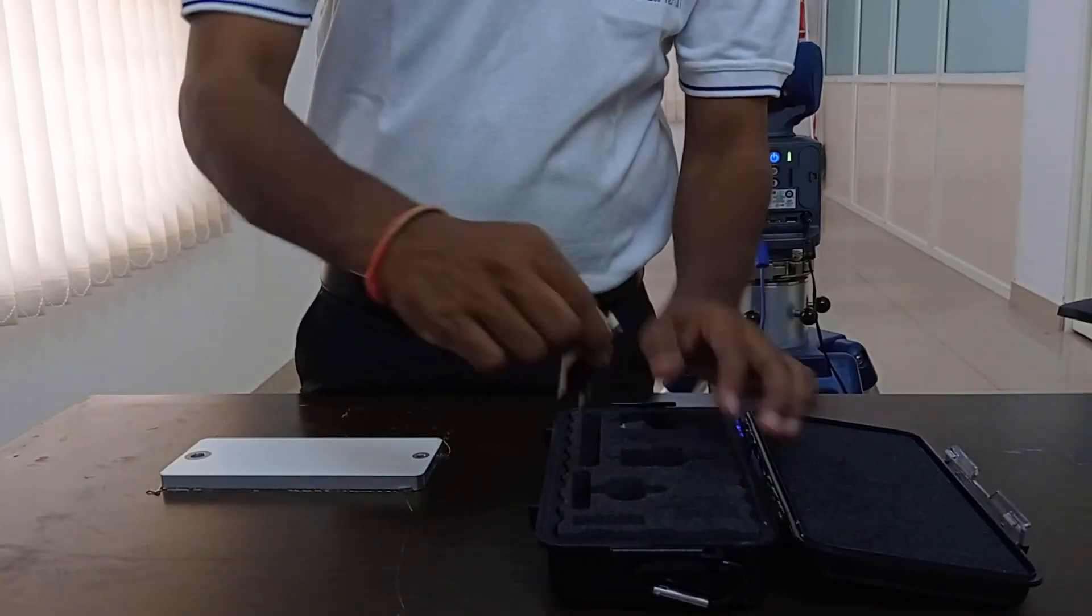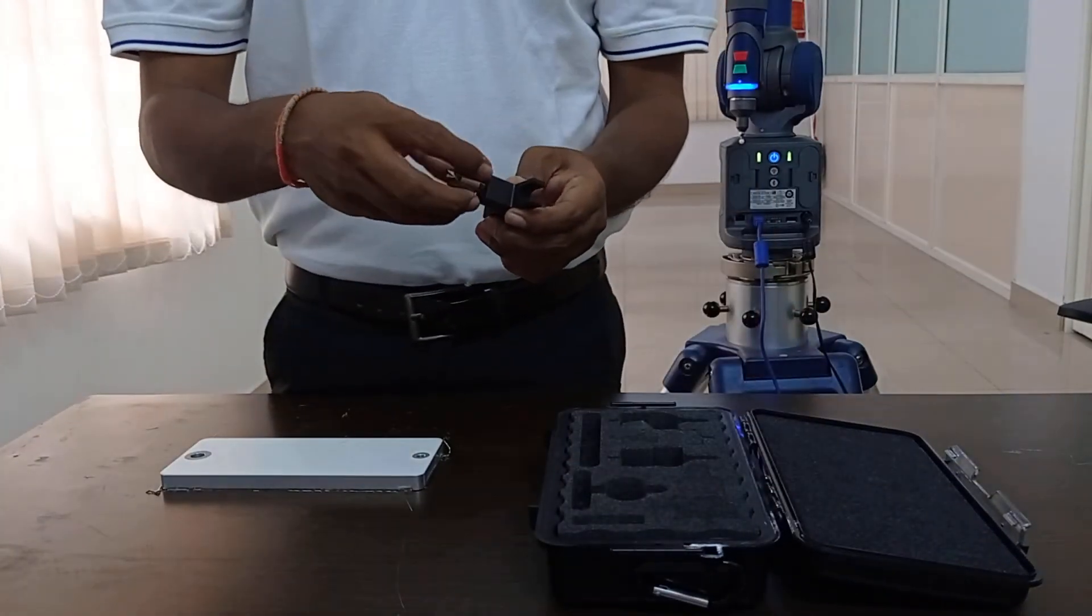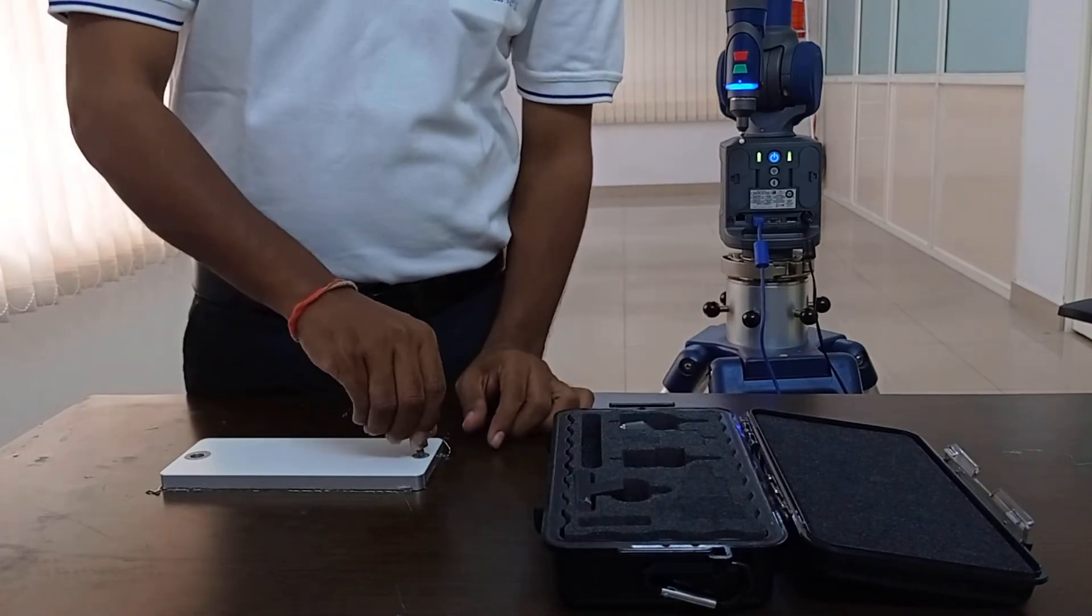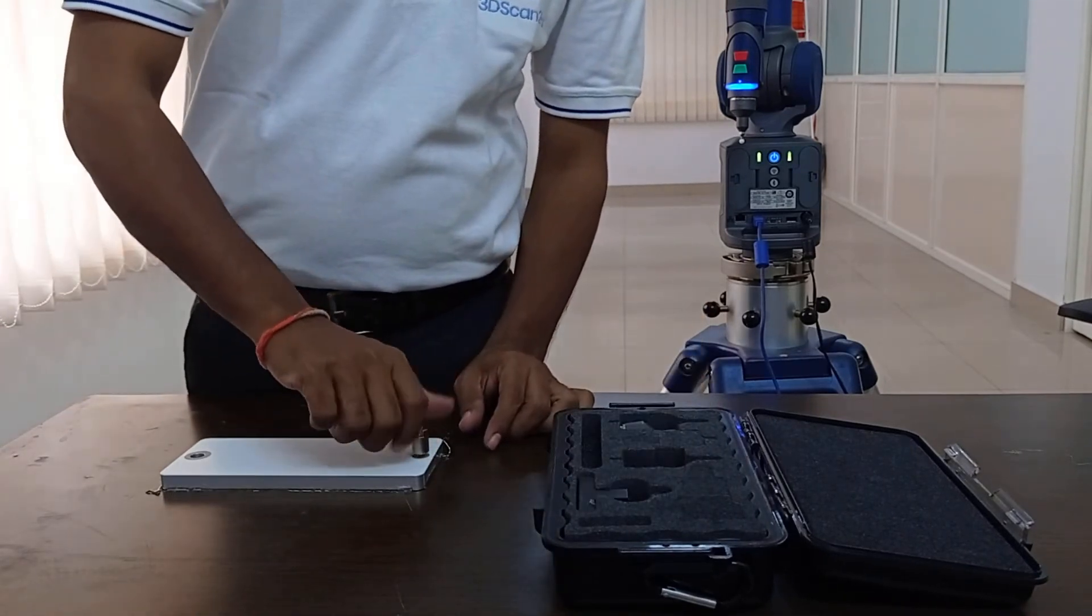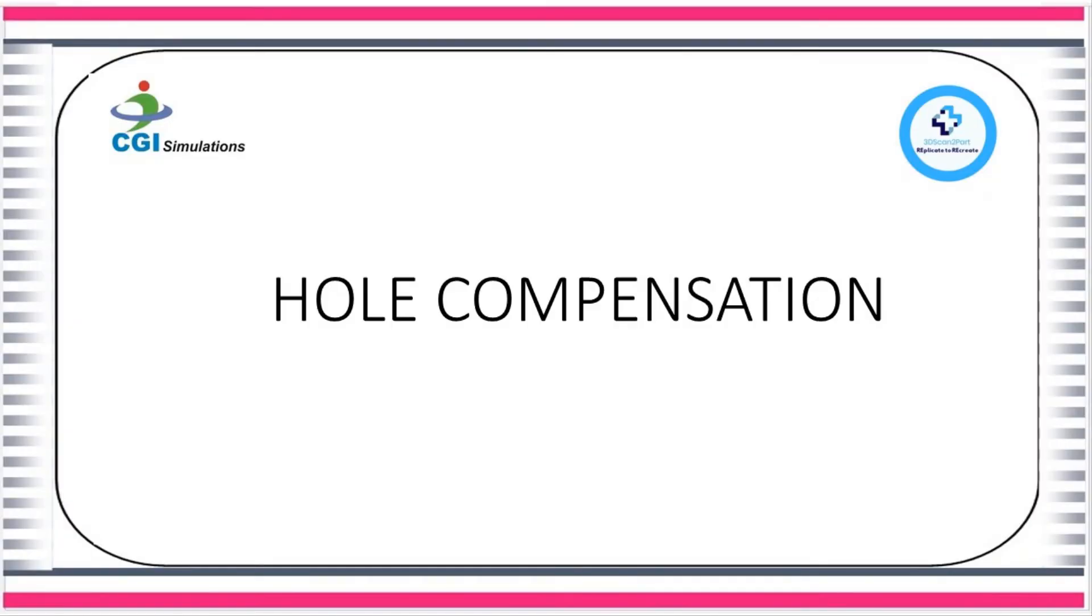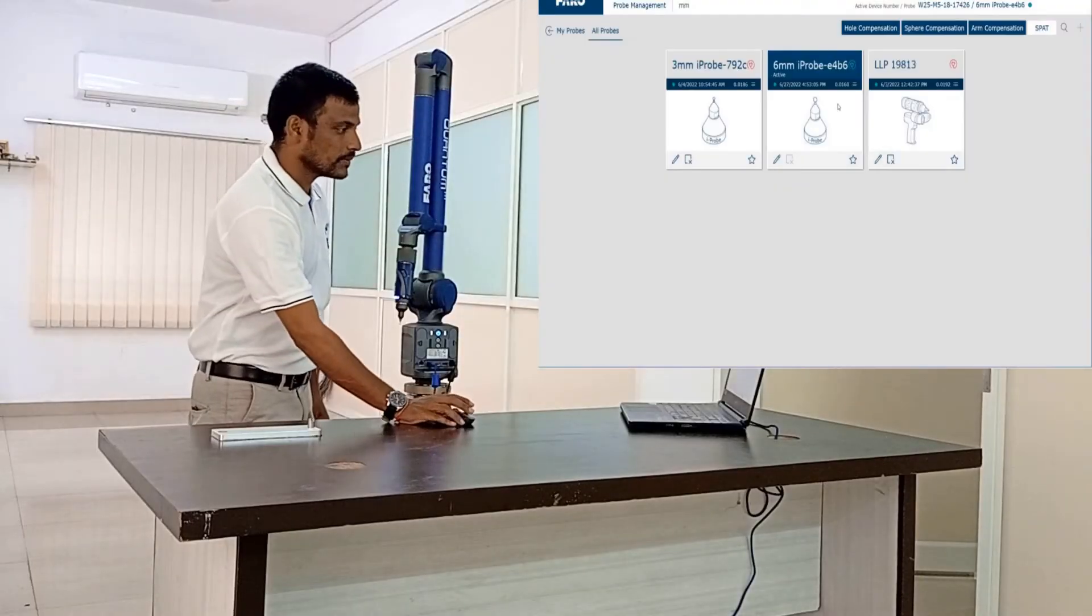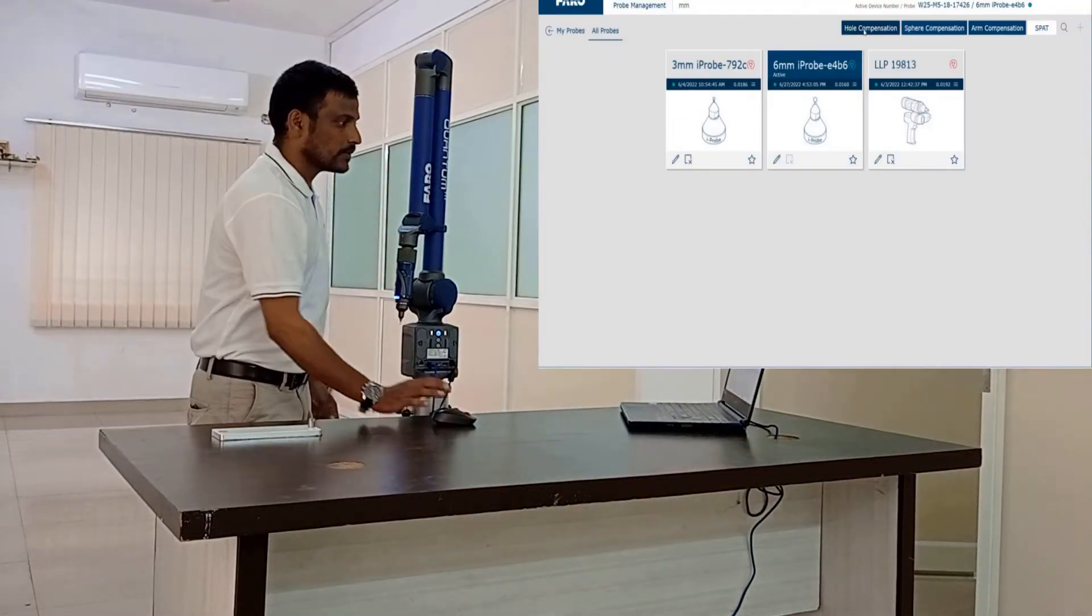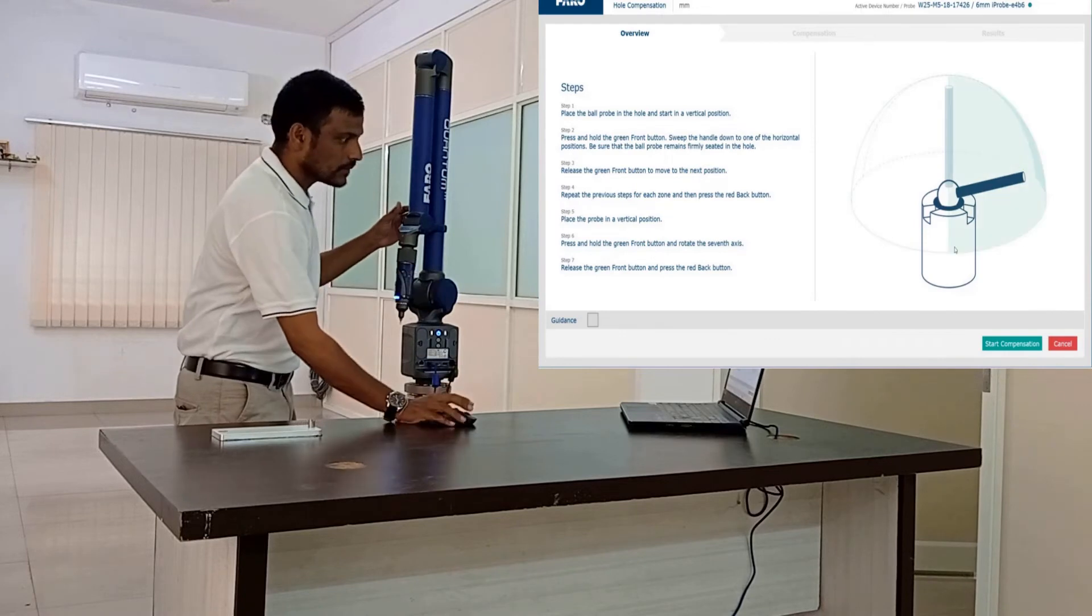Open the compensation cone and screw it to the calibration plate. Let us see how to do hole compensation. Open Faro arm manager and at the top you can click on hole compensation. Using the dialog box that has opened we can calibrate the probe by viewing the instructions.